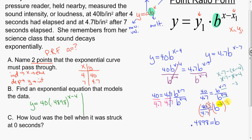My other option is to use the (7, 4.7) point with the point ratio form and write y equals 4.7 times 0.4898 to the x minus 7. What you want to remember is these look different, but by the theory of the point ratio form, if you graphed both of them they would be the exact same equation. You can only see one graph if you did it on your calculator.